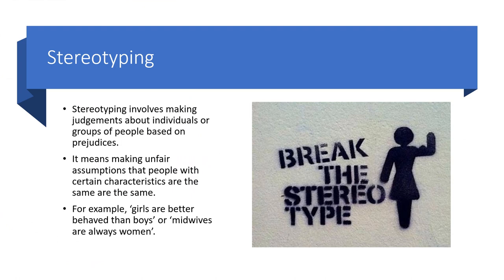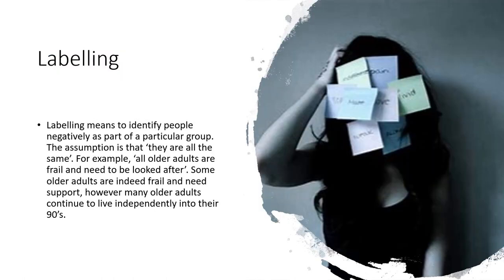Stereotyping involves making judgments about individuals or groups of people based on prejudice — making unfair assumptions that people with certain characteristics are all the same. For example, girls are better behaved than boys, or midwives are always women, or French people always wear berets, or old people are always frail. Labelling is very similar to stereotyping — it means identifying people negatively as part of a particular group, assuming they are all the same. For example, all older adults are frail and need to be looked after, or all youngsters are troublemakers. However, many adults continue to live independently into their 90s.